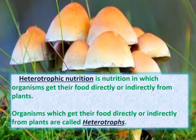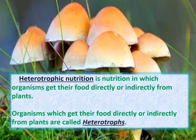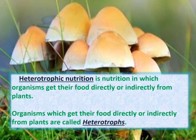Heterotrophic nutrition: The word hetero means other and trop means nutrition. Thus, heterotrophic means nutrition obtained from others. Heterotrophic nutrition is nutrition in which organisms get their food directly or indirectly from plants. Organisms which get their food directly or indirectly from plants are called heterotrophs. For example, animals and non-green plants have heterotrophic mode of nutrition and are called heterotrophs.